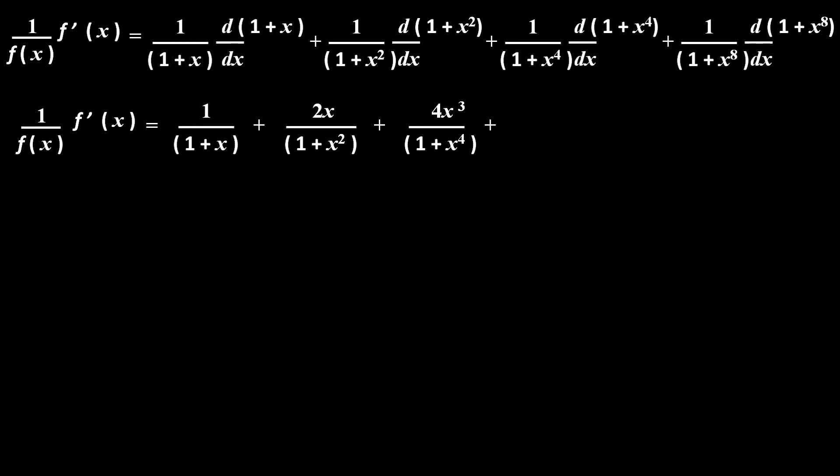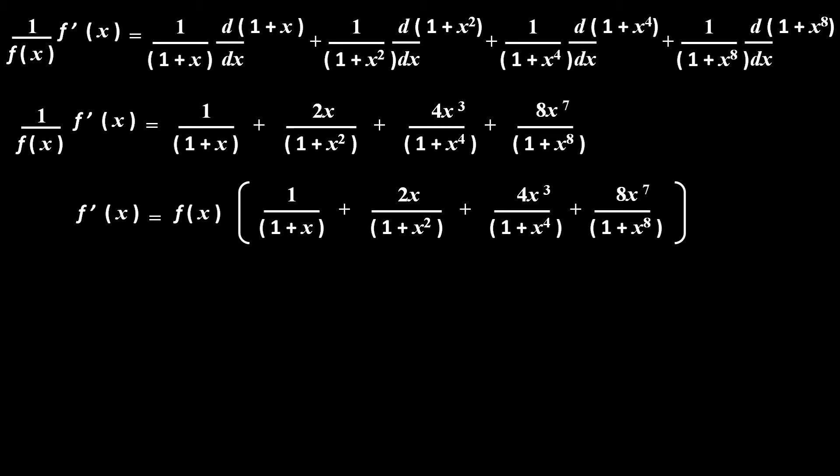Plus, in the fourth term, derivative of (1+x⁸) — derivative of 1 is 0 and derivative of x⁸ is 8x⁷ — so the fourth term becomes 8x⁷/(1+x⁸). Multiplying both sides by f(x), we get f'(x) equals, in the right hand side, f(x) multiplied by the whole right hand side bracket as above.